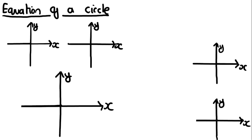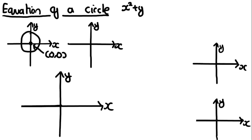This video is on the equation of a circle. As you might remember from GCSE, the equation of a circle with its center at the origin — the origin being (0, 0) — is x squared plus y squared is equal to r squared. This is the equation for a circle with the center at (0, 0), and r is the radius of the circle.